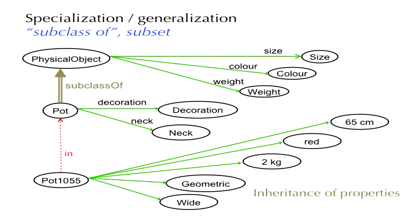The third mechanism we consider is specialization or generalization — a mechanism that declares subclass-of or subset. Consider the class pot and the class physical object. Every pot is a physical object, so the set pot is a subset of the set physical object. In terms of classes, the class pot is a subclass of the physical object class. Because subclass-of has the meaning of subset, the subclass pot inherits all the properties defined at the superclass physical object.